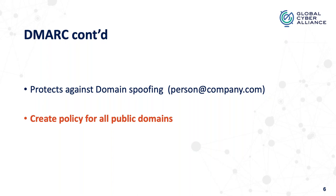Also remember what you're going to create these policies for — all public-facing domains. If you own a domain and it's public-facing, regardless of whether it's used for email or not, you want to create a DMARC policy for it. Create a policy of reject for those not being used for email, put in the appropriate DMARC records, and set P equals reject. That way no one can use that domain for any email purposes. Also, when you create a policy for the top-level domain, it automatically applies to all sub-level domains as well. You don't have to do it separately for www, mail, etc. — do it once and it covers all subdomains.